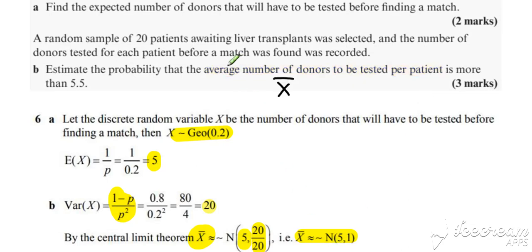Because it's the average number of donors that you're finding the probability of, that's your prompt that it's a probability associated with X-bar and not X. That's your prompt to use the central limit theorem. You just need to think carefully about what your n value was—your sample size—so that you can set up your central limit theorem approximation.